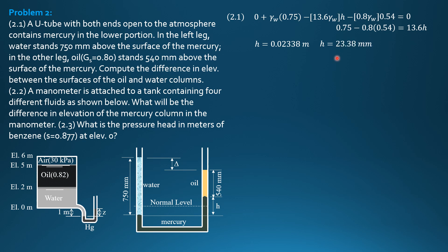So delta from the figure is 750 minus H minus 540, or minus quantity 23.38 plus 540. So delta is equal to 186.6 mm. That's the difference between the water surfaces and the oil surfaces in the legs.